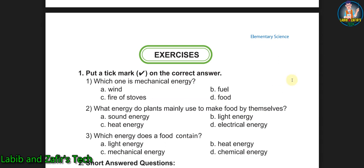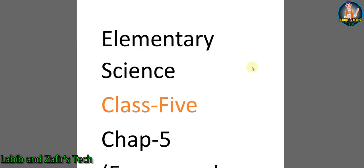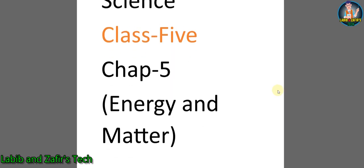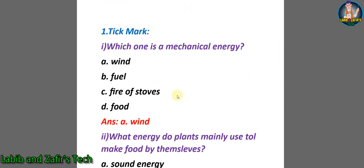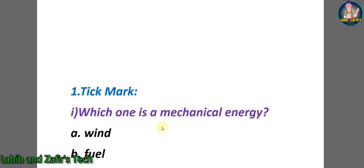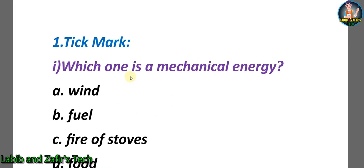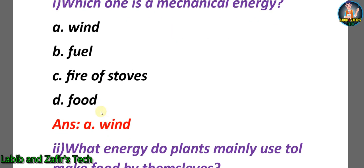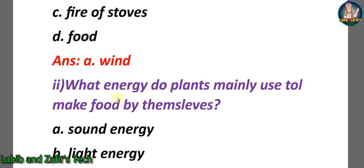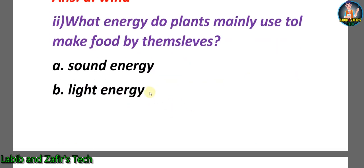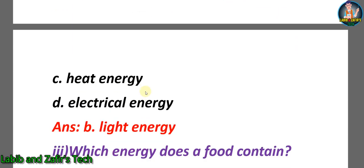Now students, let's go through the exercises part of this chapter. Elementary Science Class 5, Chapter 5: Energy and Matter. At first, students, we will go through some tick marks. Number one: which one is mechanical energy? A) wind, B) fuel, C) fire of stoves, D) food. The answer will be A: wind. Number two: what energy do plants mainly use to make food by themselves? A) sound energy, B) light energy, C) heat energy, D) electrical energy. The correct answer will be B: light energy.